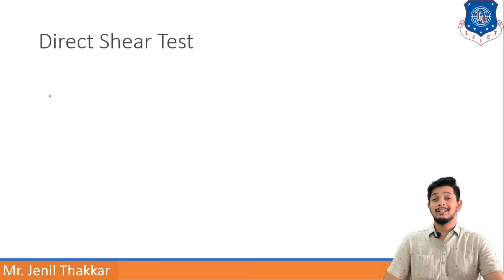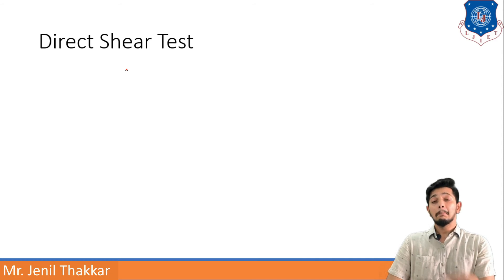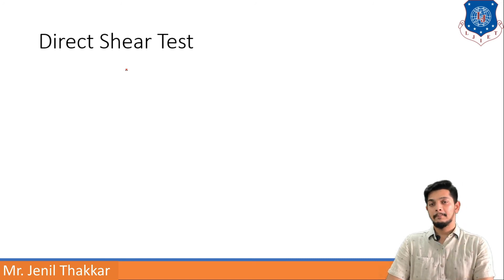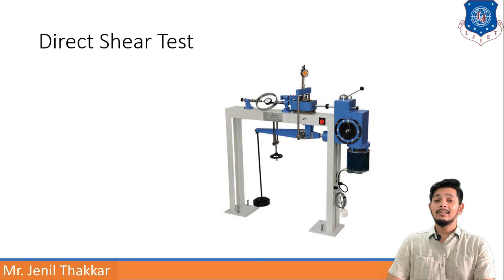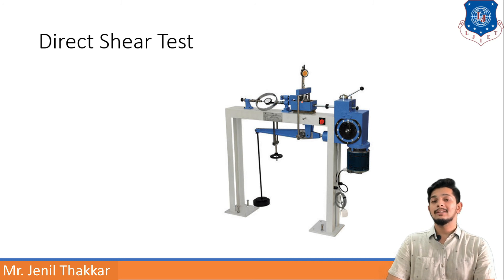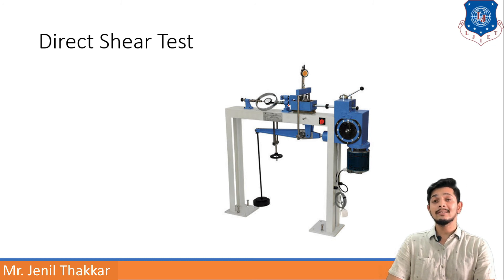Let us move to the direct shear test, also known as the shear box test. In this assembly, a blue box contains the soil specimen. Dial gauges and a proving ring are attached to give different measurements. Both normal stress and shear stress can be applied to the specimen through this test.